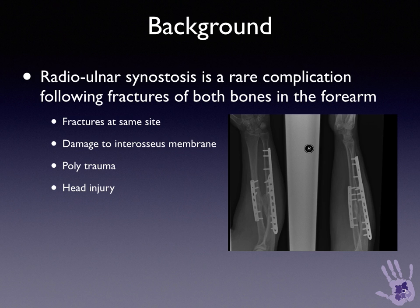Synostosis is a rare complication of forearm fractures, often associated with injuries to both bones, occasionally occurring at the same site with damage to the interosseous membrane. It is usually seen in polytrauma patients and often also associated with a head injury.